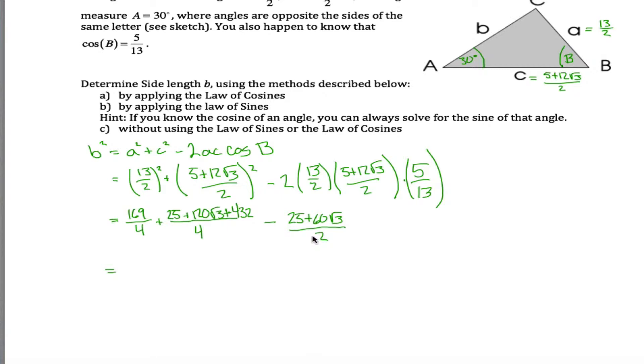Okay, if I had a common denominator, I could add up the numerators of all of these guys. 169 over 4. In this one I got 25 and 432. So that's 457, I think, plus 120 root 3 over 4. And then over here I have a denominator of 2. I would like it to be 4. To make it 4, I'll multiply the top and the bottom by 2. That will make this 50 plus 120 root 3 divided by 4.